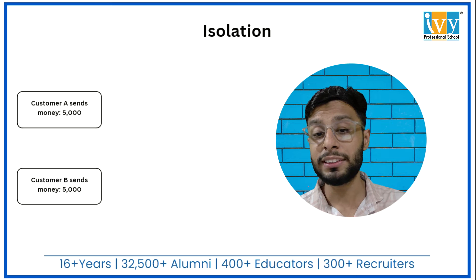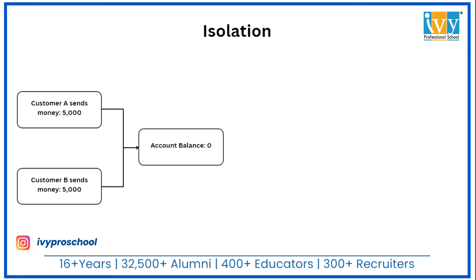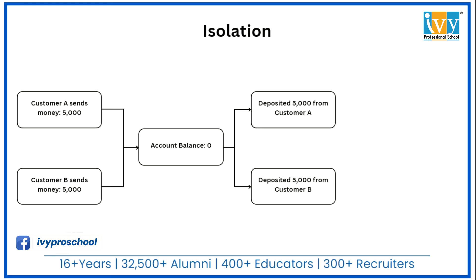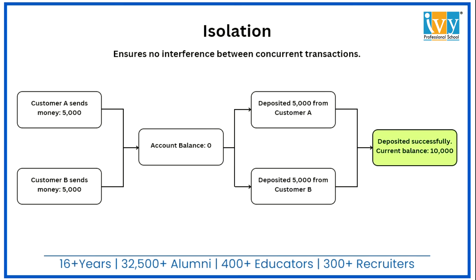For example, let's say there are two customers, A and B, both trying to send 5,000 to a creditor account that has a zero balance. Both deposit 5,000 simultaneously. After processing both deposits, the balance will reflect 10,000, showing both deposits were successful. Isolation ensures the final state remains correct whether transactions are executed sequentially or concurrently.